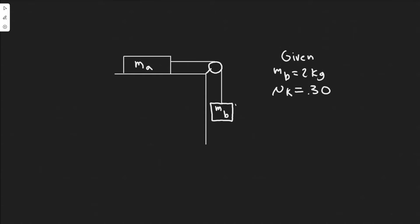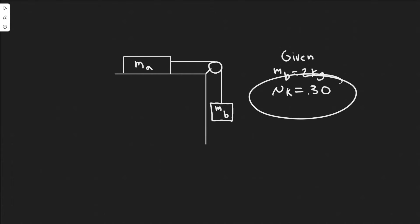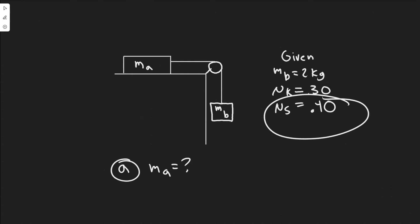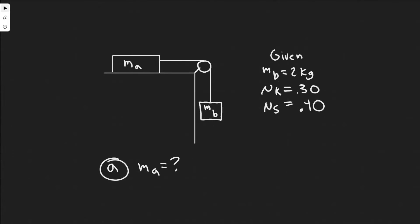What we have here is these two blocks, MA and MB, connected by a pulley. MB is here. We're given the mass of MB, the coefficient of kinetic friction, and the coefficient of static friction — that is 0.40. We're going to be solving for a bunch of things, so let's start with part A. Part A is asking us to find the minimum value of MA, so we're finding a mass. Keep in mind we're finding a mass that will keep this system from starting to move, which tells me we're going to be using the coefficient of static friction. Before we get started, I think we should draw the free body diagram first.